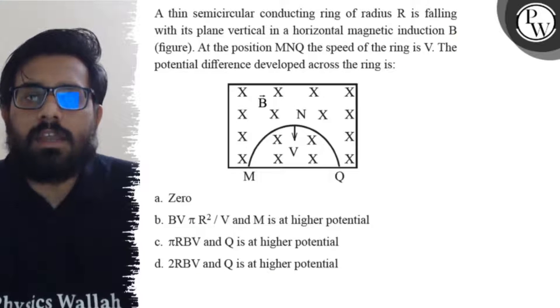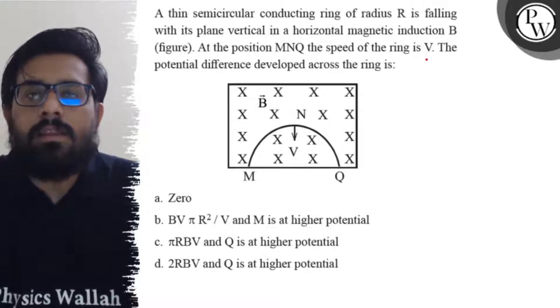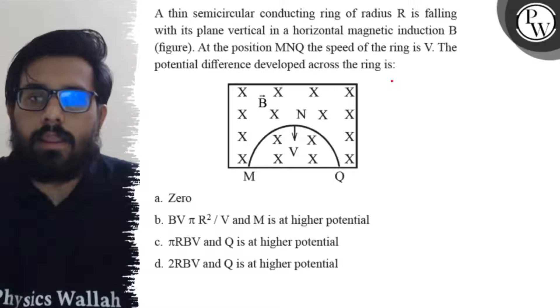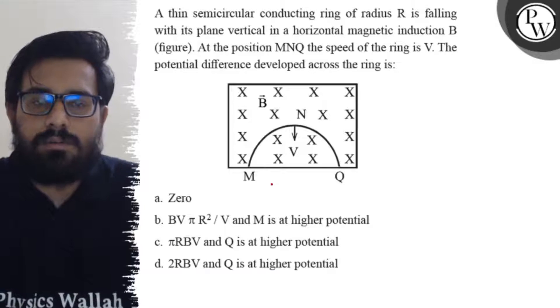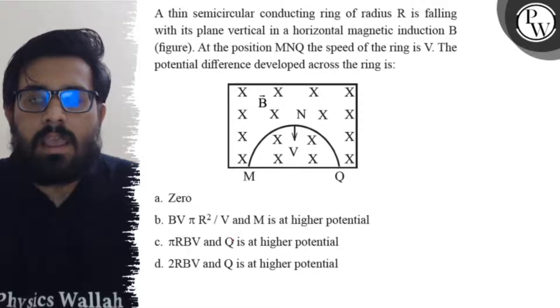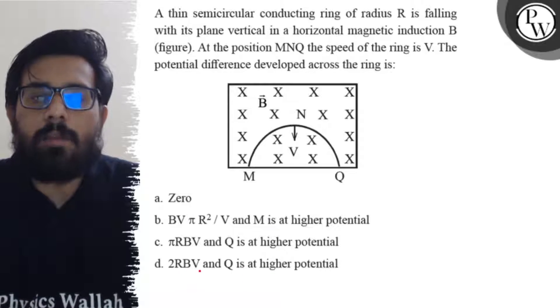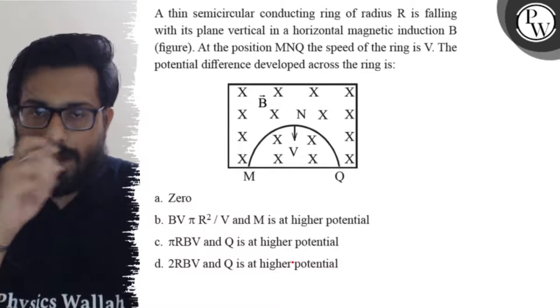At the position MNQ, the speed of the ring is V. The potential difference developed across the ring is: first option is zero, second option is BV = πR²/V and M is at higher potential, third option says πRBV and Q is at higher potential, and fourth option is 2RBV and Q is at higher potential.